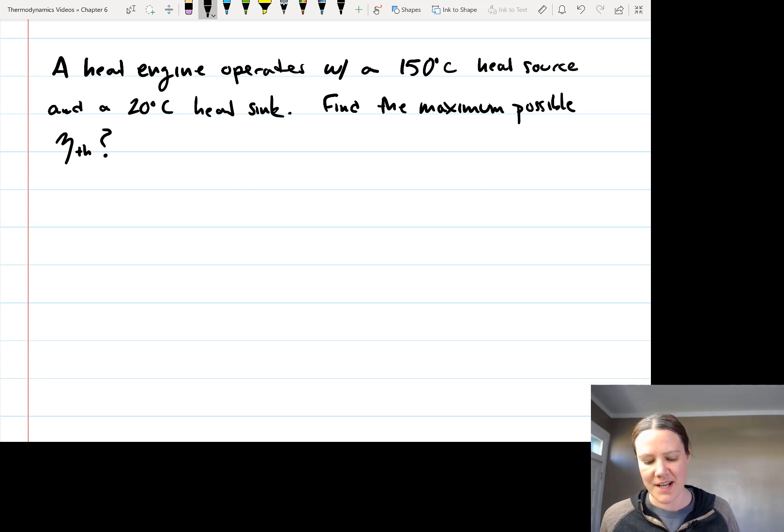In this problem, we have a heat engine that operates with a 150 degree Celsius heat source and a 20 degree Celsius heat sink. What we want to do is find the maximum possible thermal efficiency.